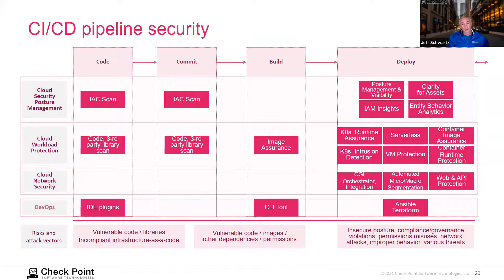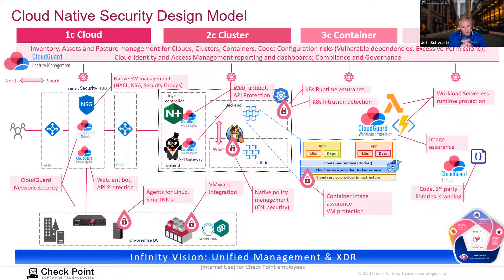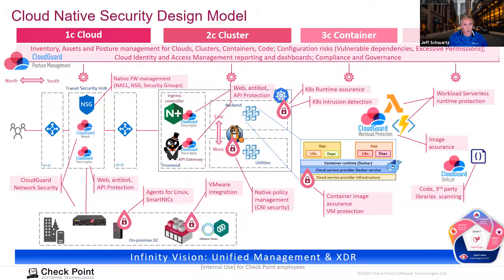If we zoom out and look at this layered security model — moving from right to left — code security, code scanning, and image assurance can be applied at a code perspective. Runtime controls and capabilities associated with container-based security elements include runtime assurance, admission control for containers, and VM protection. Moving further left: micro-segmentation, east-west security controls, API enforcement, and ultimately logical network security controls into and out of the cloud infrastructure on a dynamic basis.